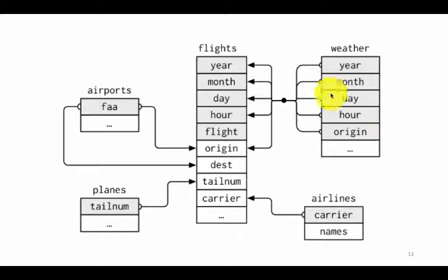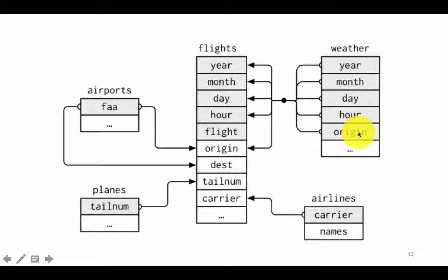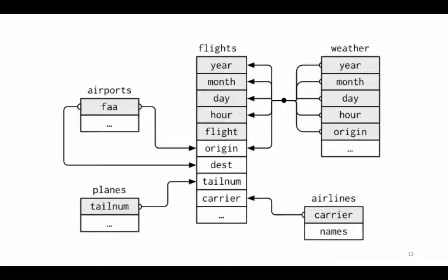There's also a connection to the weather table, which records weather at each hour at the origin airport. So for a particular airport — say EWR — on a given year, month, day, and hour, what was the weather? That information is all there. To find information about any of these things in RStudio, assuming you've loaded the NYCFlights13 package, you can type question mark planes, question mark airports, question mark flights, question mark weather, or question mark airlines — with no space between the question mark and the name — and you'll get a description of that particular table.